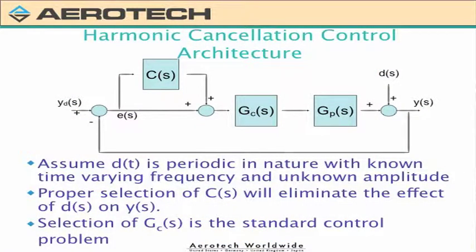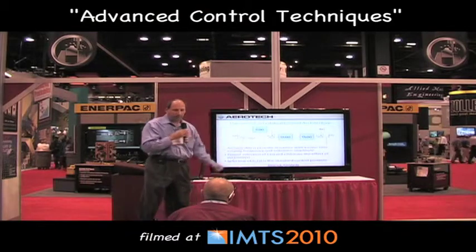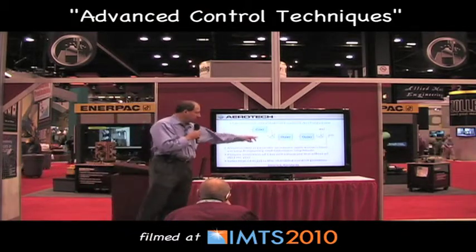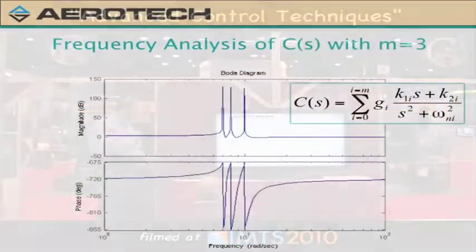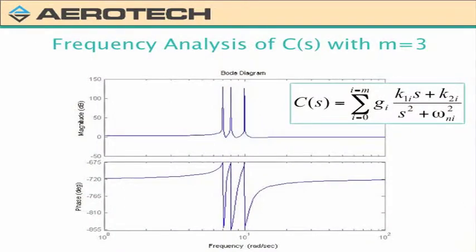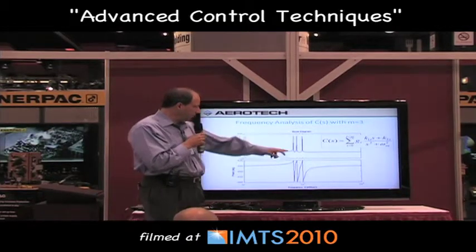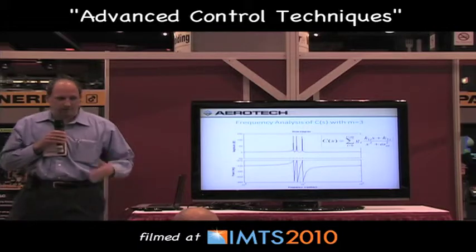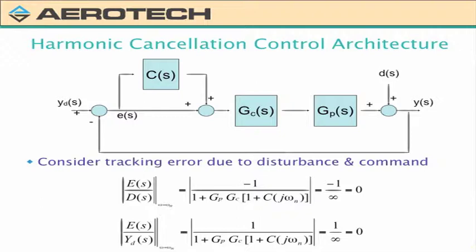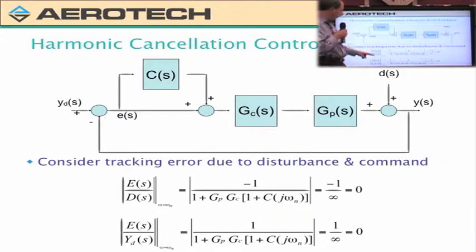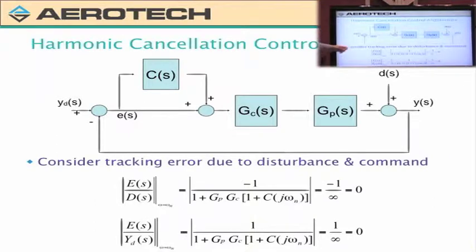The harmonic cancellation architecture has a typical plant and controller, with a new controller inserted into the system — here I call it CFS. It acts on the error signal and adds back into the error signal. You can make an appropriate selection of that filter, basically a peak notch type of filter. Looking at the frequency response, you see very high gain at specific frequencies. If you evaluate the output Y due to a disturbance input, you get one over infinity, which is zero. So any sinusoidal disturbance will not affect the output, and a sinusoidal input will produce zero tracking error.